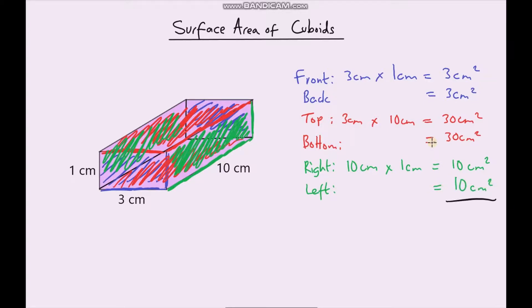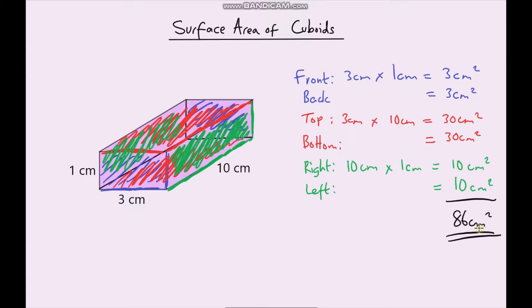So we've worked out the surface area of each individual face. Now to work out the total surface area, we just need to add up all of these values. So 3 plus 3 is 6, and then 6 plus 30 is 36, plus 30 is 66, plus 10 is 76, plus 10 is 86. So it's 86cm² — that is the total surface area of our cuboid.